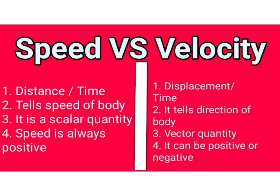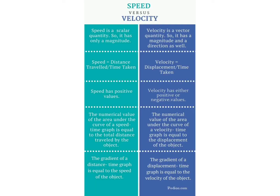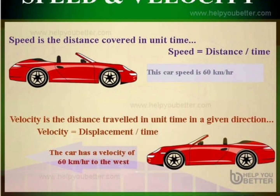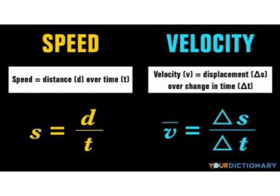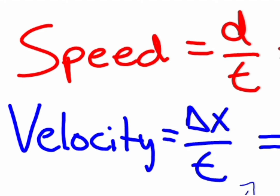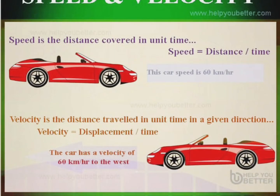Now we will discuss uniform velocity. Uniform velocity means constant velocity — a body moves in a straight line and covers equal distances in equal intervals of time, no matter how small the interval of time is. The velocity of a body can be changed in two ways: first, by changing the speed of the body, and second, by keeping the speed constant but changing the direction.